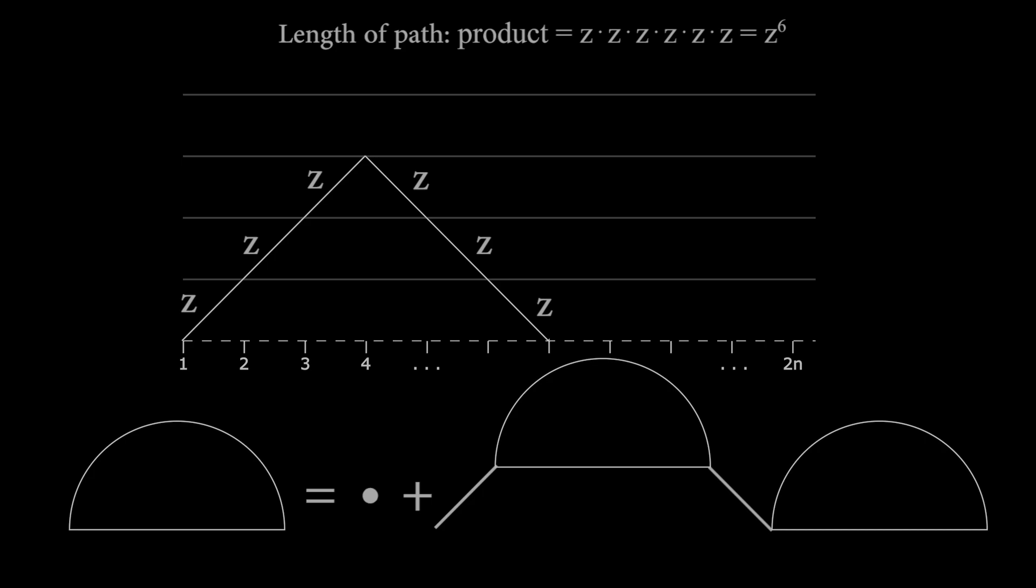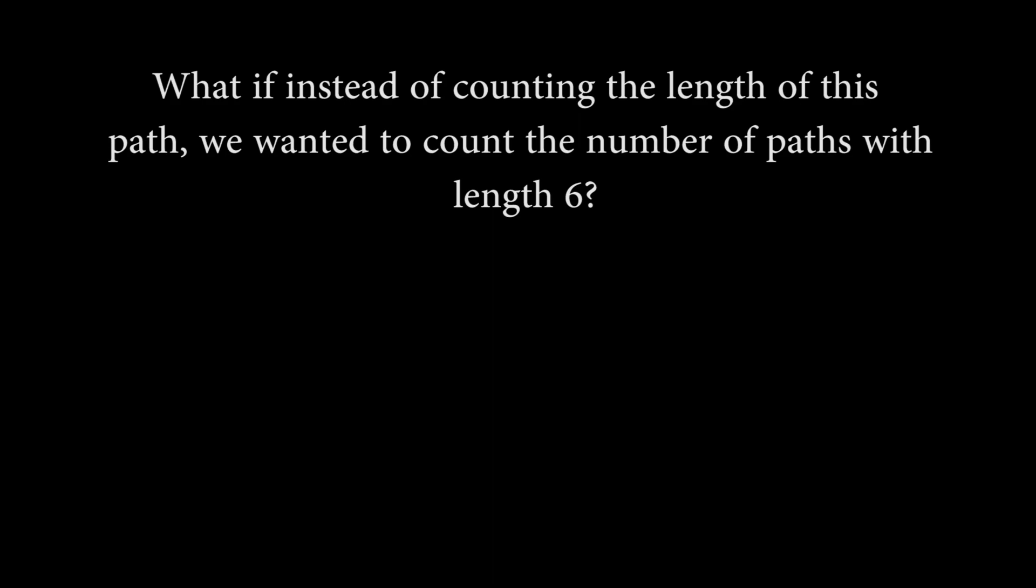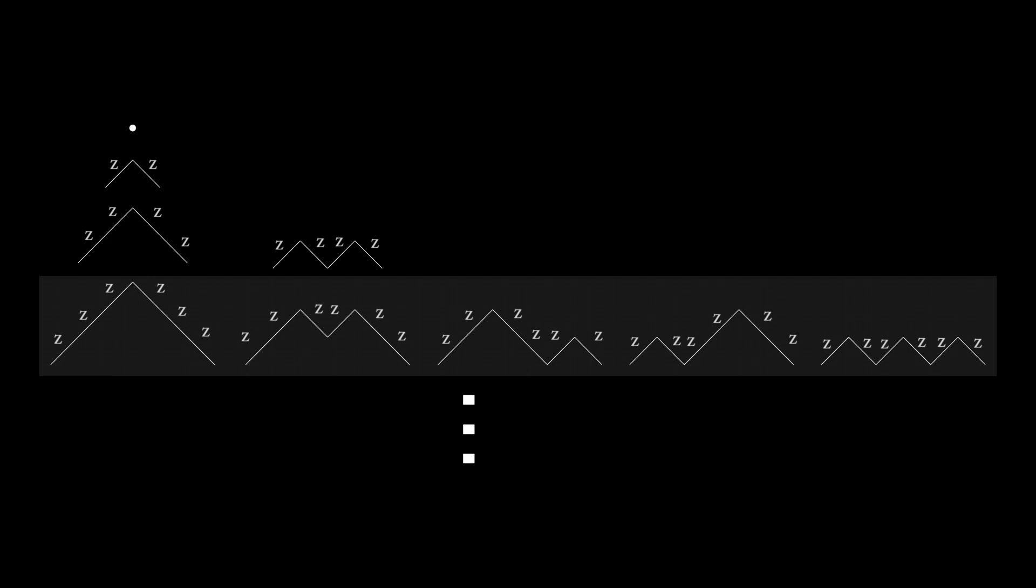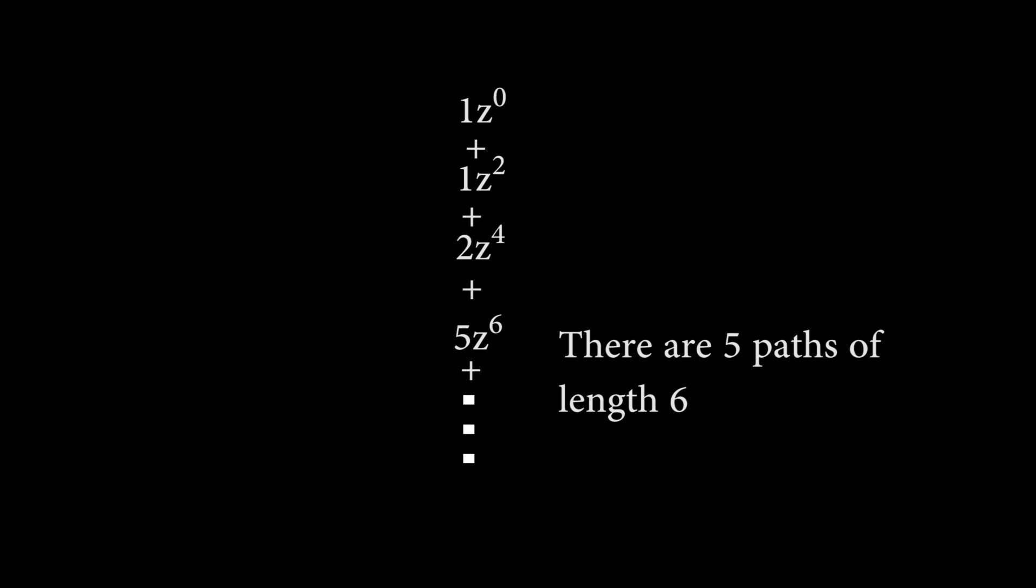Well, there's actually a really nice property that we get when we count using this method. What if instead of just counting the length of this path, we wanted to count the number of paths which have length 6? Imagine that we have a set of all possible paths that follow our two constraints. Now, count all of them using the counting variable z. Notice that exactly 5 of these paths produce z to the 6, which corresponds to the fact that there are only 5 paths of length 6 in this set. Now, let's take all of the results of counting these paths and add them together. We get an infinite sequence of z's raised to different powers. Now, if we join like terms, the coefficients tell us how many paths there are with the length indicated by the exponent. For example, look at 5z to the 6. We can interpret this as saying that there are five different paths which have a length of 6.